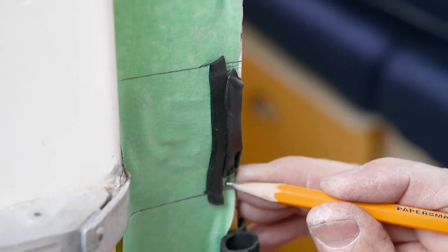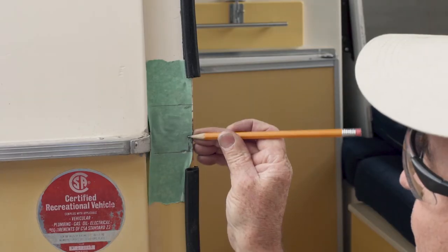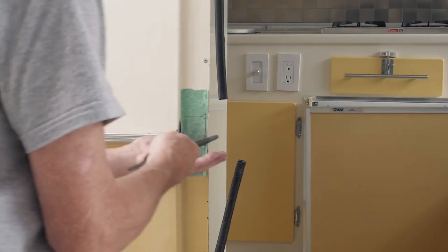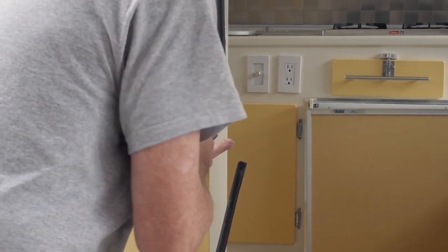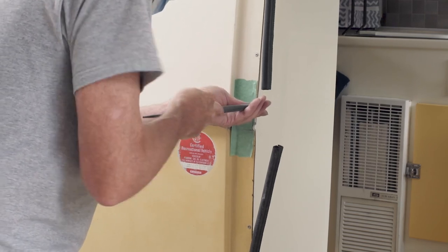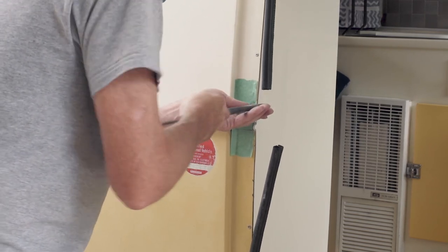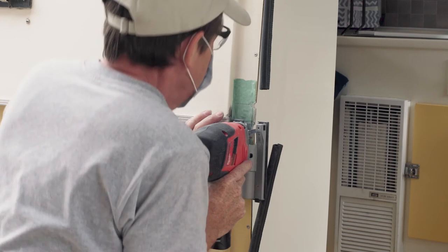Mark the masking tape where the deadbolt and latch imprinted the butyl tape. Use a round file on the top and bottom marks then the jigsaw to cut the remaining fiberglass. Usually the door jamb only needs to be trimmed about a quarter inch.